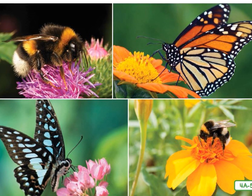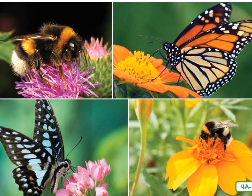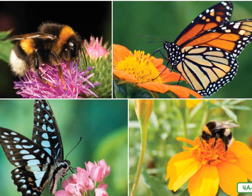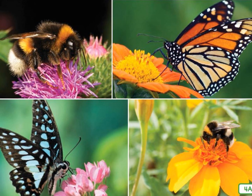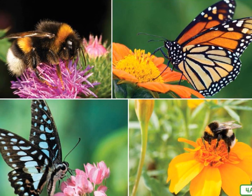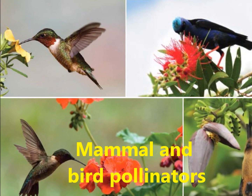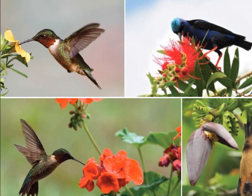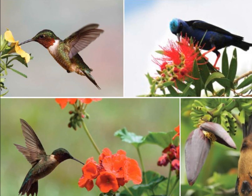Honeybees are the most common pollinators. They carry out more pollination than any other insect. Some scientists think that bees are attracted to bright blue and violet-colored flowers, whereas butterflies like fragrant yellow, pink, red, and orange flowers. Butterflies also like wide petals so that they can settle on them while they drink the sweet nectar. Birds are important pollinators too, especially of wildflowers. For example, hummingbirds have perfectly designed beaks that can reach the nectar inside long, tubular-shaped flowers.